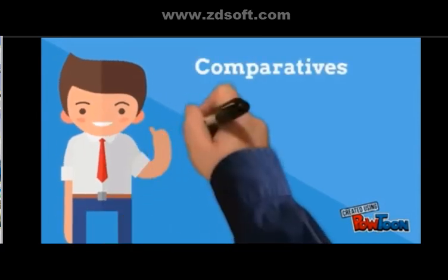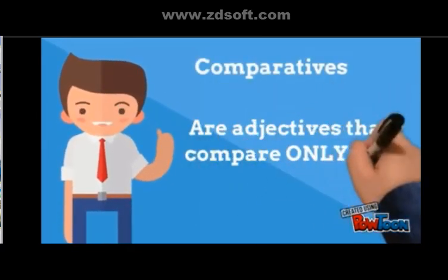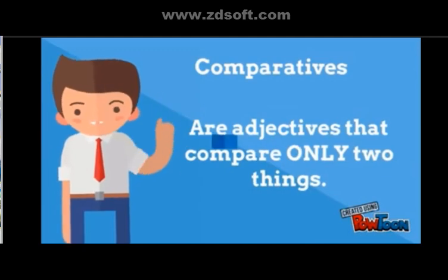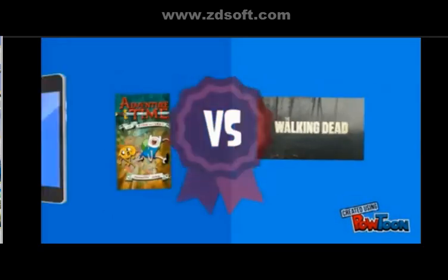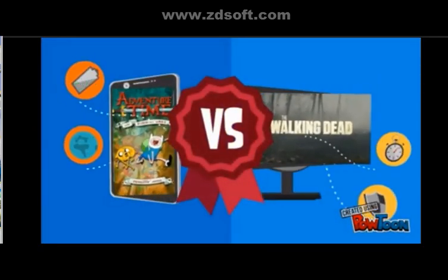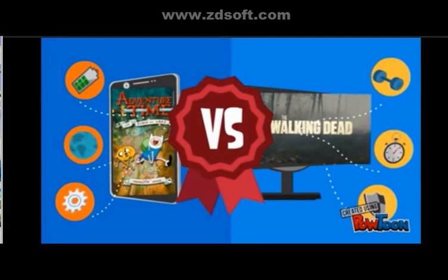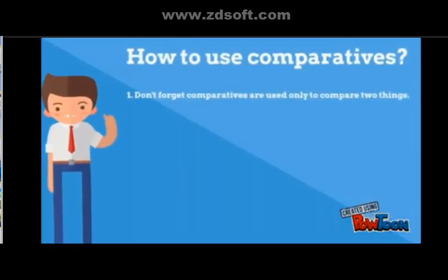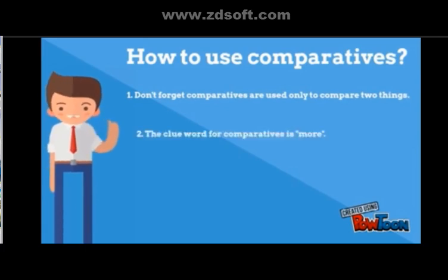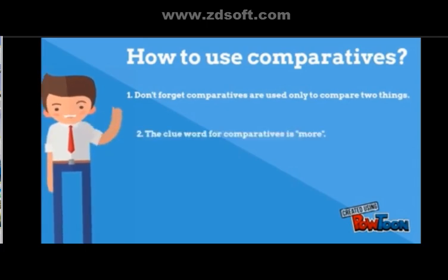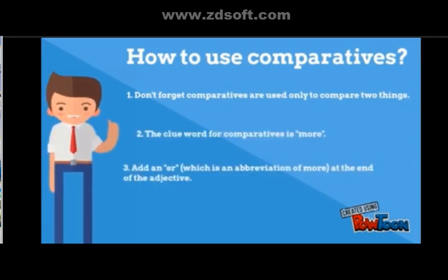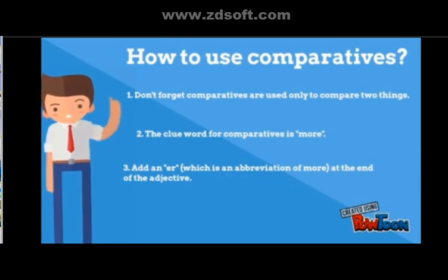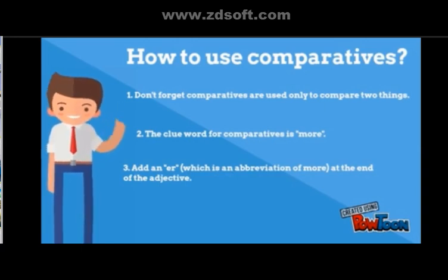What are comparatives and superlatives? Comparatives are adjectives that compare only two things. It's like comparing cartoons and TV series. How to use comparatives: first, don't forget comparatives are used only to compare two things. The clue word for comparatives is 'more' or adding '-er' — which is an abbreviation of 'more' — at the end of the adjective.